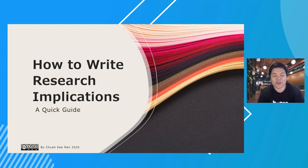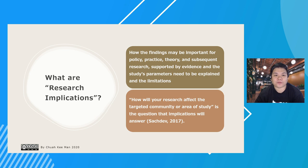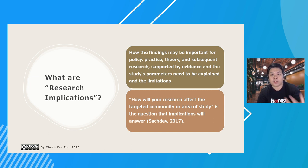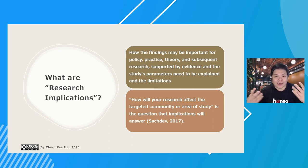Hello everyone. In this video I'll be talking about how to write the implication of the study in your research paper or even your dissertation. First of all, we need to understand what research implications are. As the name suggests, implication means the impact of your findings — whether to the policy makers, to the practice, to the theory, or anyone relevant in your scope of study. Basically, it's answering how your research will affect the targeted community or area of study.